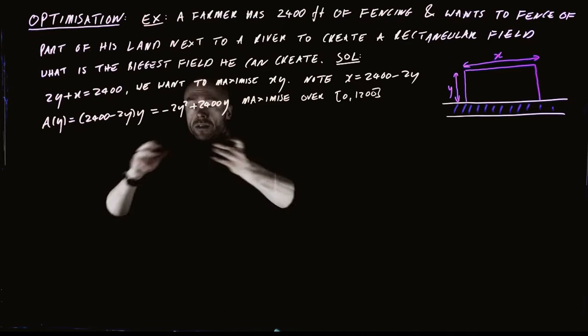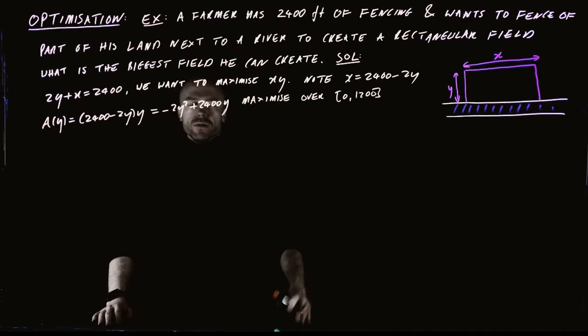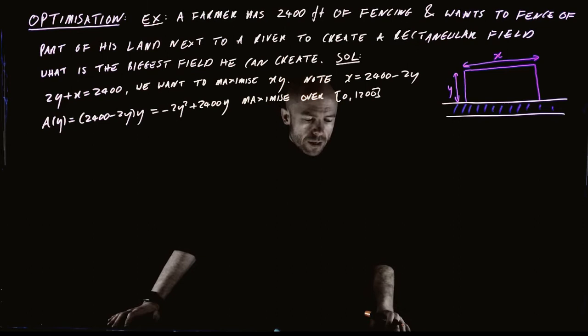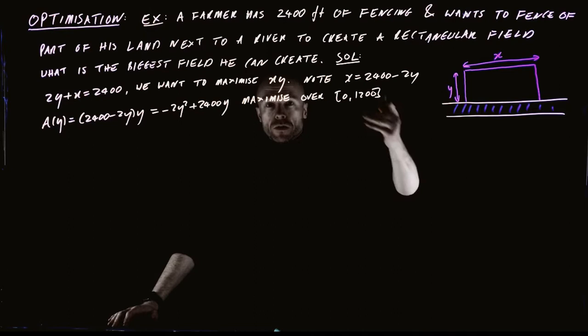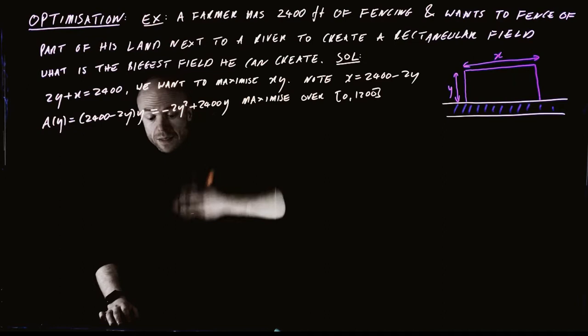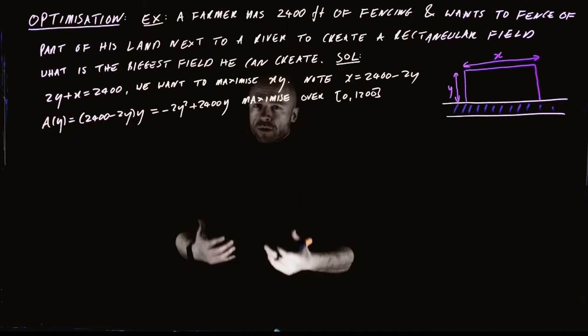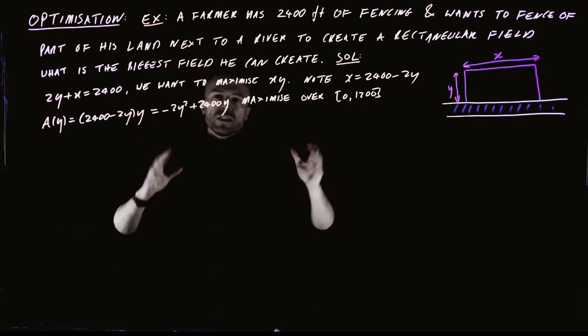We're very happy because this is just maximizing a continuous function over a closed interval — exactly the closed interval method from a couple of sections ago. We look for the critical numbers, where the derivative is either 0 or doesn't exist. Since this is a polynomial, the derivative always exists, so we just look for where the derivative equals 0.